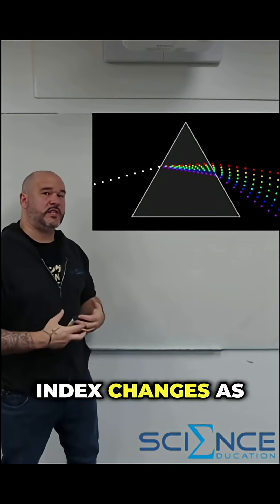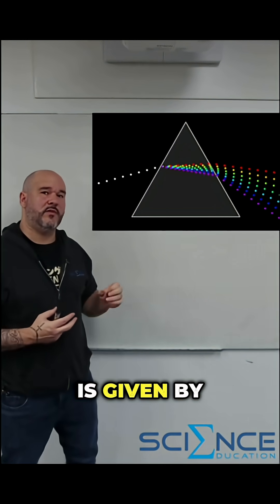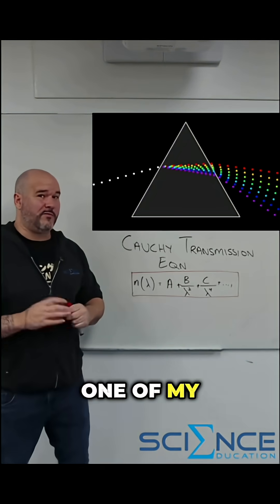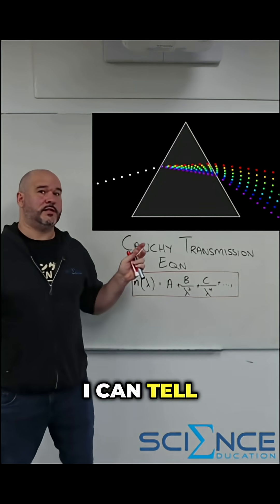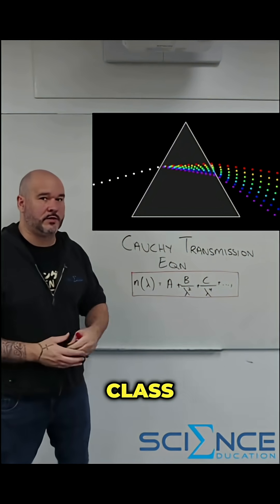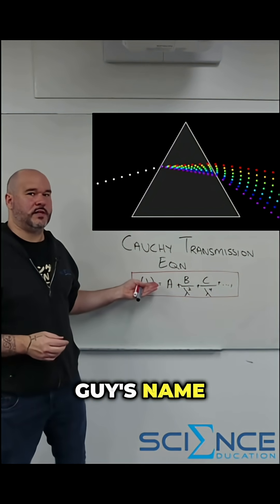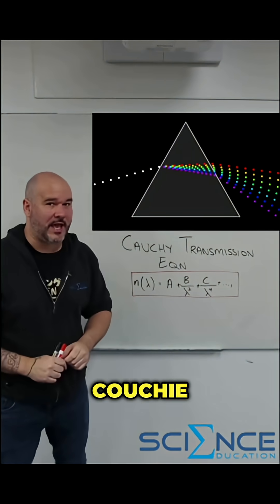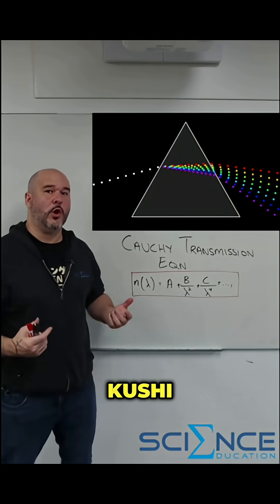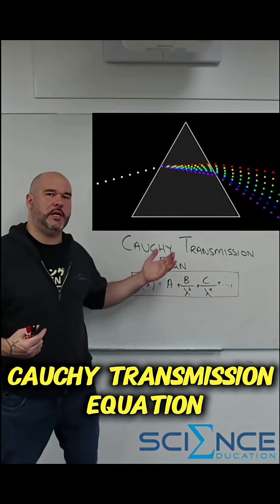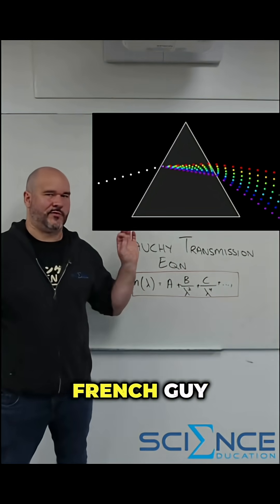Now how refractive index changes as a function of wavelength is given by the following equation. One of my old math lecturers used to say I can tell who's actually been paying attention in class on how they actually pronounce this guy's name. Guaranteed you're thinking Couchy. It's actually pronounced Cauchy. So this is the Cauchy transmission equation because he's some French guy.